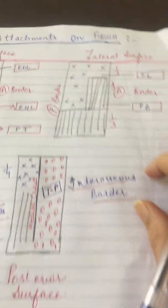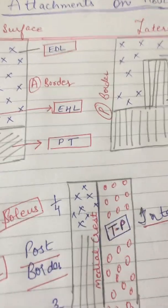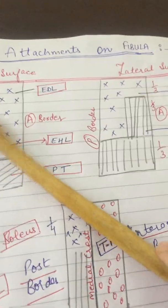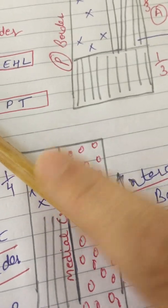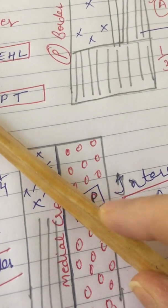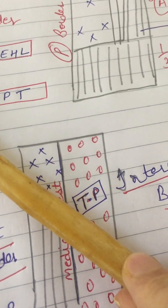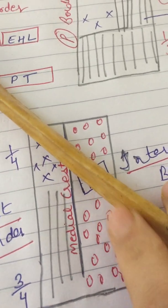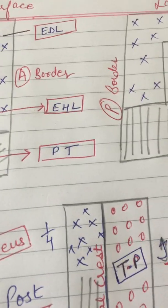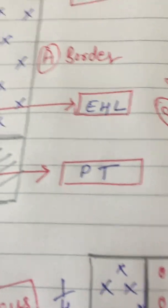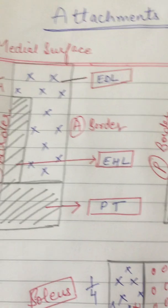Hello viewers. In this video I will discuss the attachments on the fibula. The fibula is a very thin bone — this is the anterior border, this is the medial border, this is the medial surface, this is the lateral surface, and this is the posterior surface. The attachments on the fibula are divided on their individual parts, and I have made a diagram which will show you the attachments.